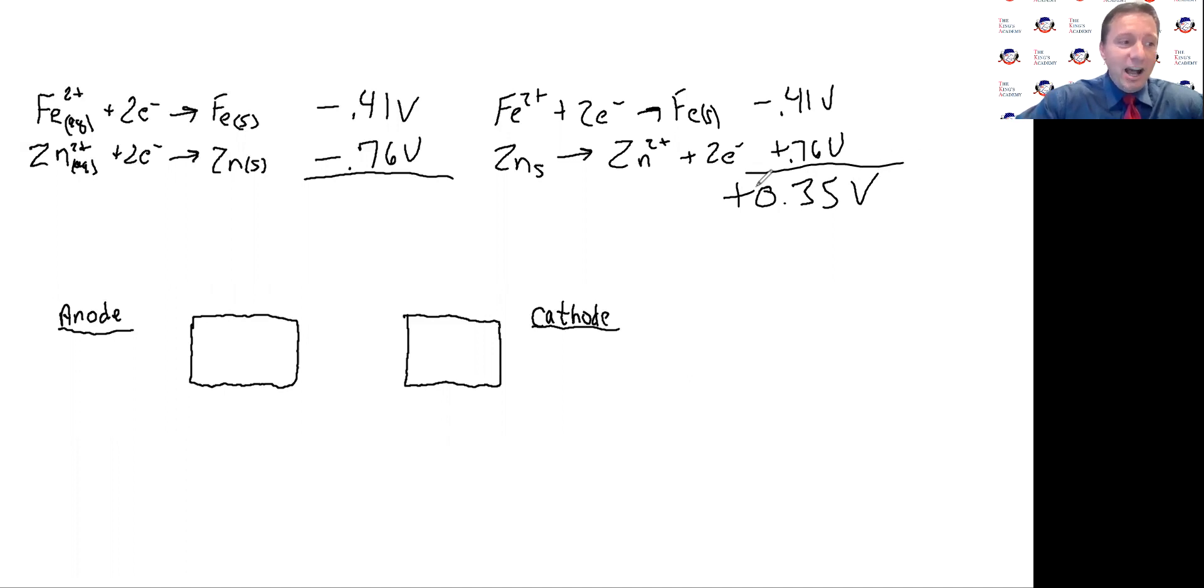So that means the anode is going to be oxidized. Anode has to be oxidized. And the cathode is reduced. So I'm going to place my probes in here. So the oxidized has to be the zinc from what we got right here. So I'm going to put my zinc right here. And on this side here, I'm going to label that as my zinc. And over here, I'm going to place my iron. And this is my Fe.